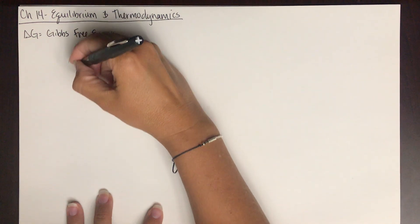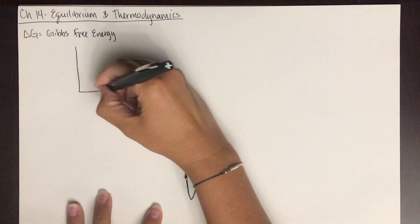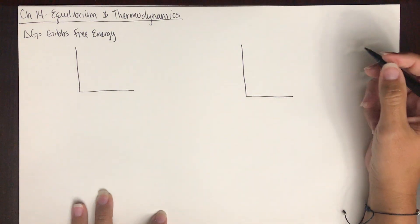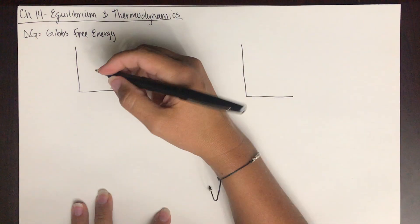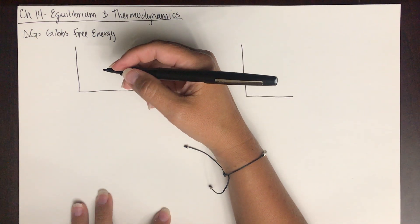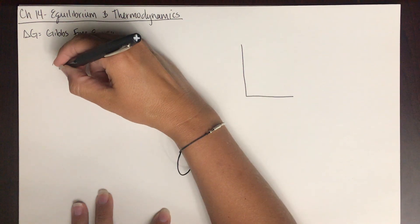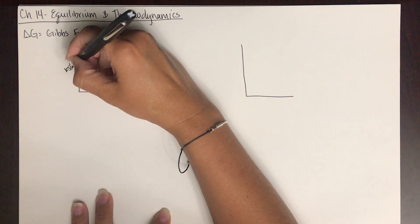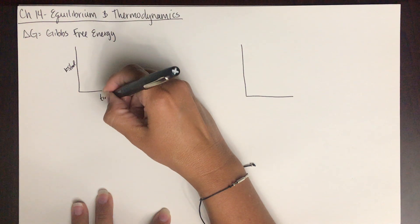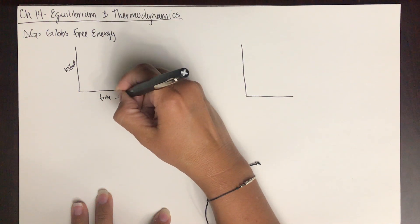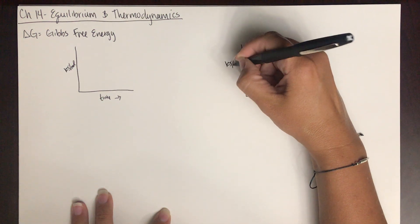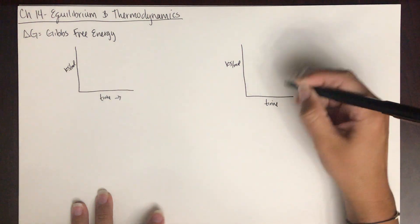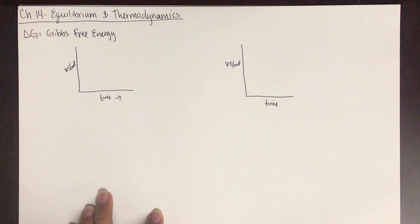Let's just review this for a second. Look at these energy diagrams. If we have energy in kilojoules per mole on one axis, and time or progress of the reaction on the other, there are two types of chemical reactions.